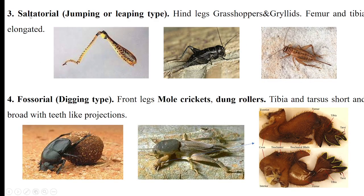The saltatorial type of legs are jumping or leaping types. The hind legs of grasshoppers and crickets are modified for jumping or leaping. The femur and tibia are elongated, which actually helps in jumping.